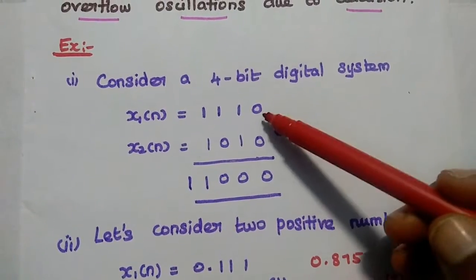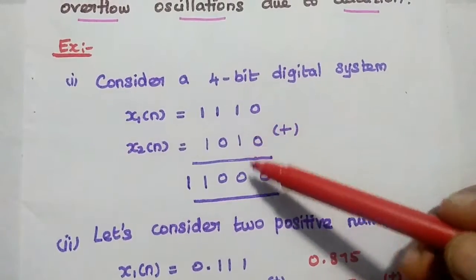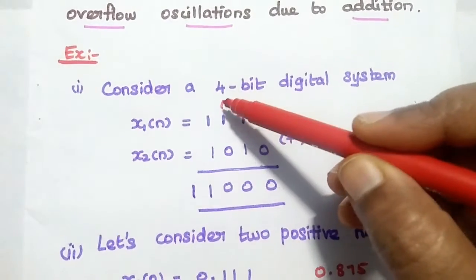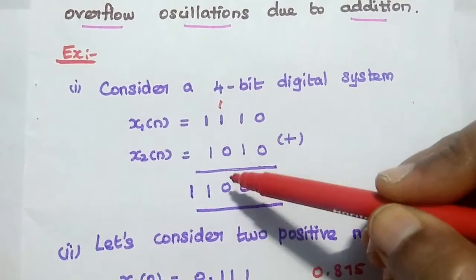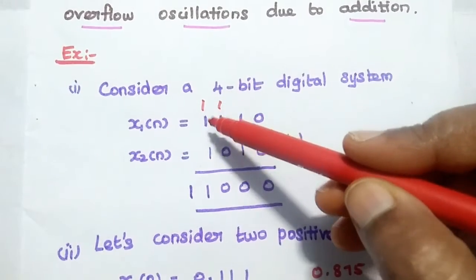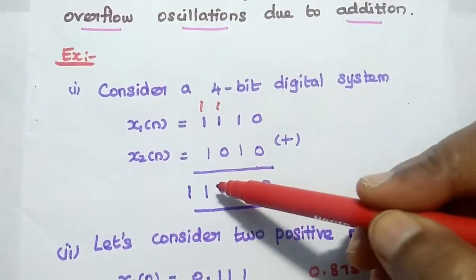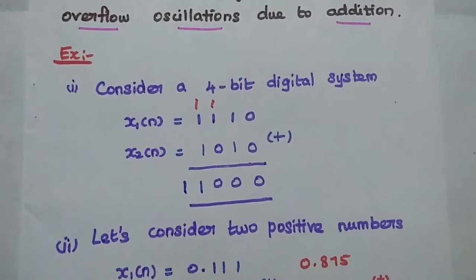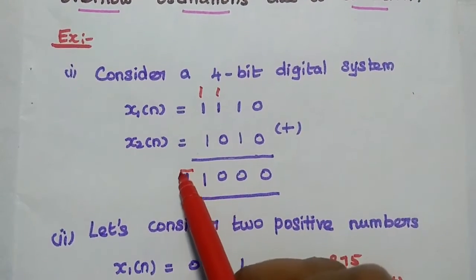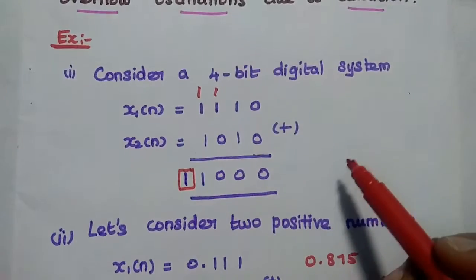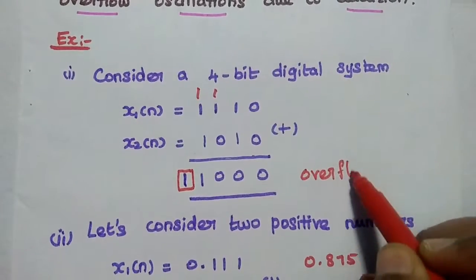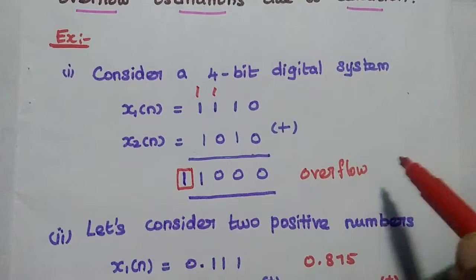If we add these two values — 1110 and 1010 — performing the binary addition step by step: 0+0=0, 1+1=0 carry 1, 1+1+1=1 carry 1, and 1+1+1=11. The result exceeds the 4-bit register size, so this extra bit represents an overflow error. Overflow occurs at the output side.